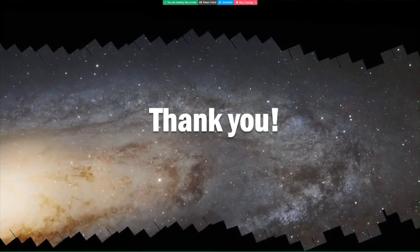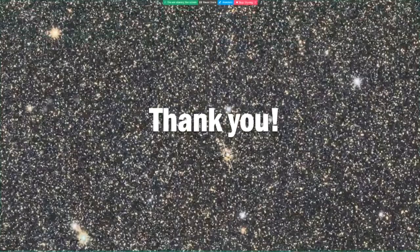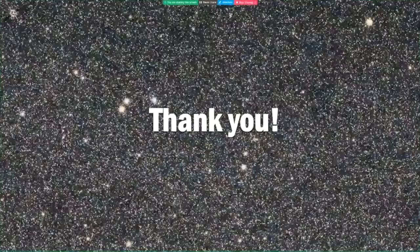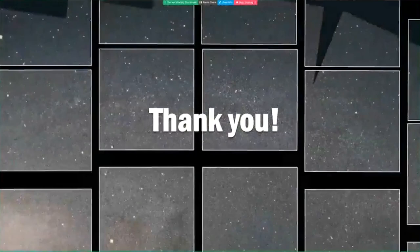Overlaid on that, there are the 400 pointings it took to make that image. Overlaid on that, you see the two pointings from Roman. Roman could cover that in two pointings. Now here's the simulated data. Each of these points of light are individual stars. We hope that you are as excited about the future of space science as we are. Thank you very much.